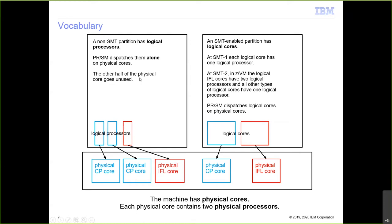When a partition opts in for SMT — either at SMT level 1 or SMT level 2 — the entities equipping the partition are no longer logical processors; they're logical cores. In SMT2, IFL logical cores have two logical processors inside them, while all other types of logical cores have one logical processor inside them. This is important because it creates two kinds of utilization: core utilization and processor utilization.